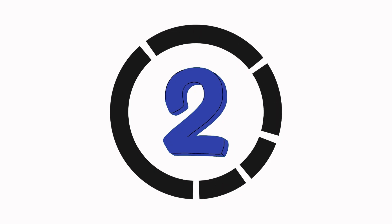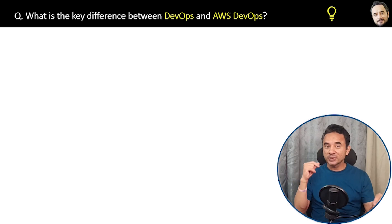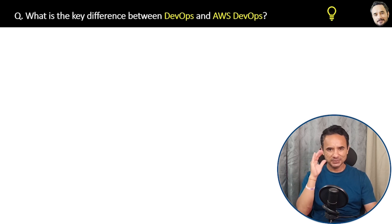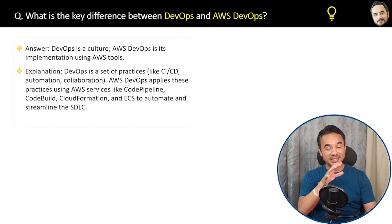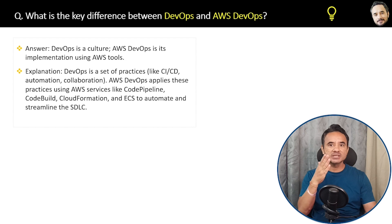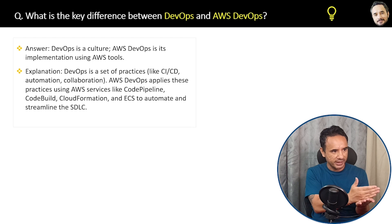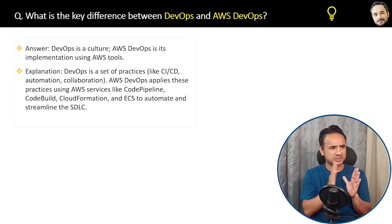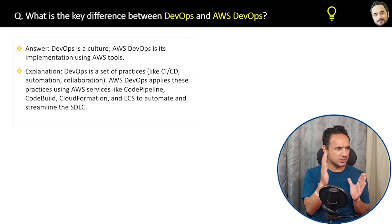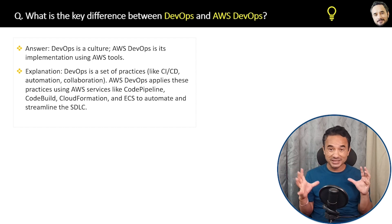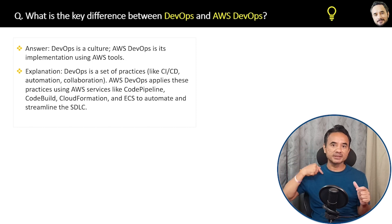What is the difference between DevOps and AWS DevOps? DevOps is a culture and a practice — it is a generic concept. AWS DevOps is how AWS provides you tools to implement that DevOps practice. DevOps is the practice; AWS DevOps applies that practice using tools like AWS CodePipeline, CodeBuild, and CloudFormation.